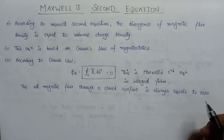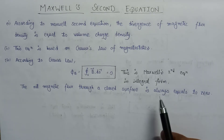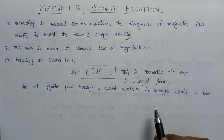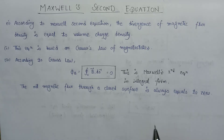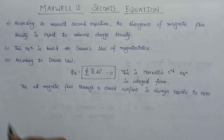This is all about Maxwell's second equation in integral form. Now let us derive Maxwell's second equation in differential form, also called point form. For deriving this, we have to take the divergence, which can be done by applying the divergence theorem.